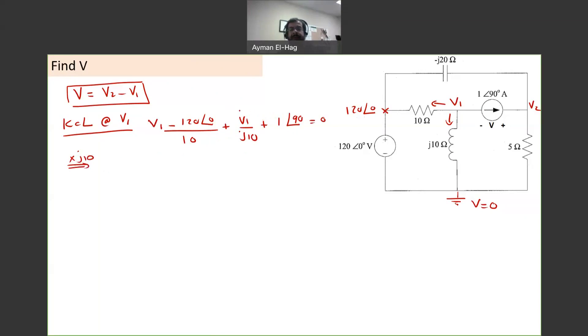So there are different ways of solving this problem. This will be J10 times the whole equation: V1 minus 120 angle of zero divided by 10 plus V1 over J10 plus one angle of 90, and everything is equal to zero.